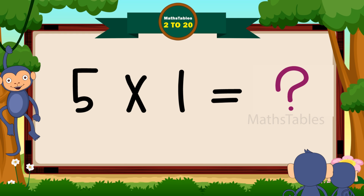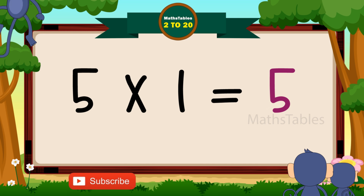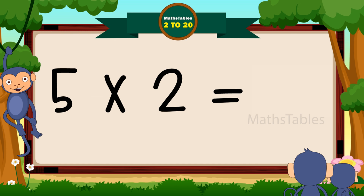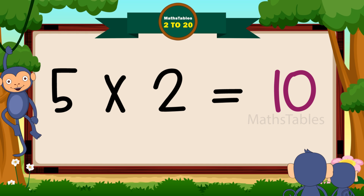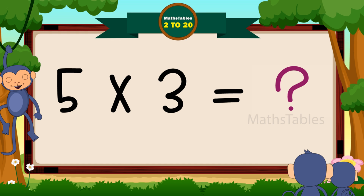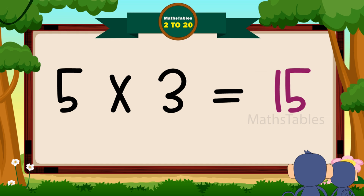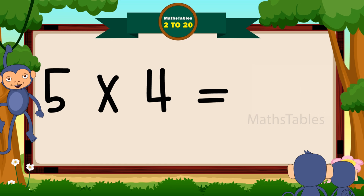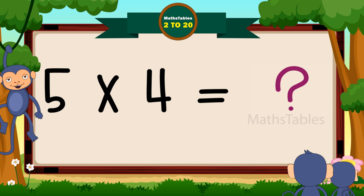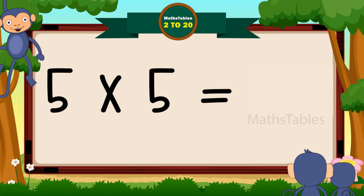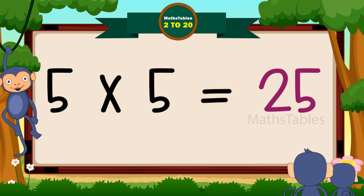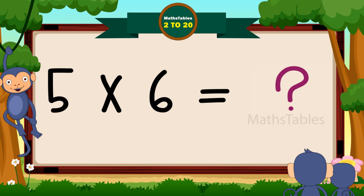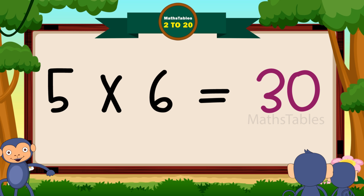Five ones are five. Five ones are five. Five twos are ten. Five threes are fifteen. Five threes are fifteen. Five fours are twenty. Five fours are twenty. Five fives are twenty-five. Five sixes are thirty.